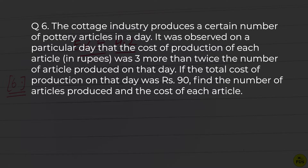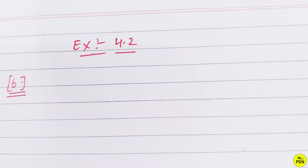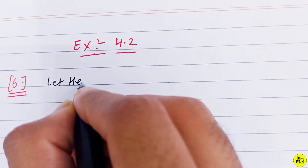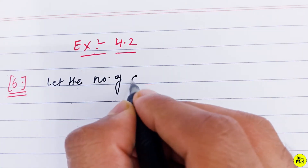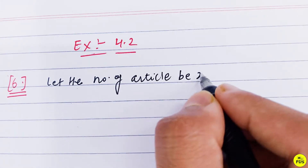A cottage industry produces a certain number of articles in a day. It was observed on a particular day that the cost of production of each article in rupees was three more than twice the number of articles produced on that day. If the total cost of production on that day was 90 rupees, find the number of articles produced and the cost of each article. Let the number of articles be x.